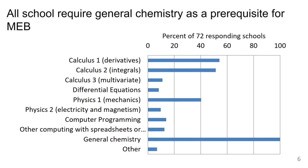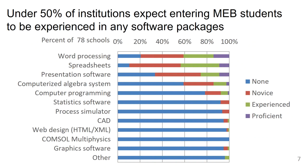For prerequisites, general chemistry is required by all of the classes. Then calculus one and calculus two are often required, and physics one is also often required.